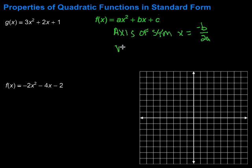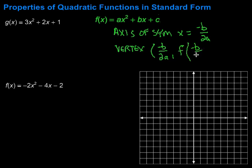We can also find the vertex, which is very useful because if we want to graph one of these, that's what we need to zone in on and then build from there. The x-coordinate of the vertex is the same as the axis of symmetry — negative b over 2a — and the y-coordinate is f of negative b over 2a. All we're doing is finding that x and putting it back into our function to get the y. It's the same idea as picking values for x when graphing.